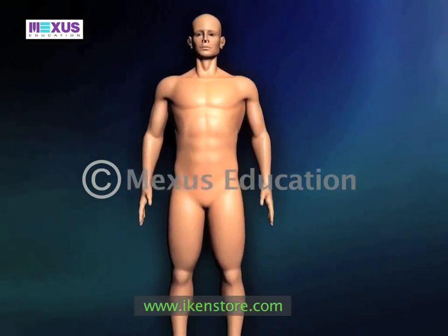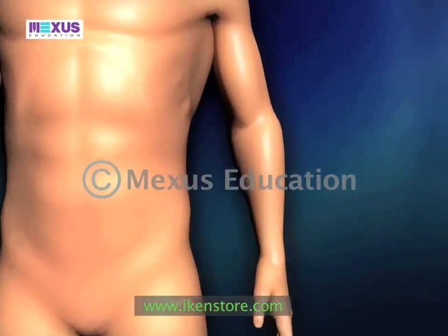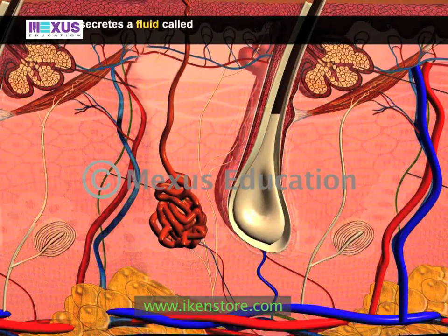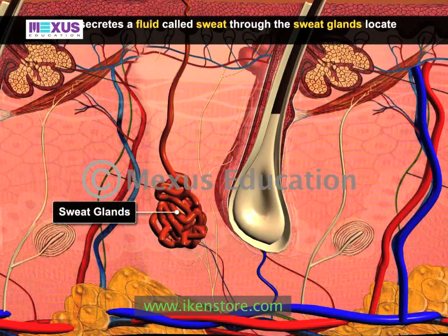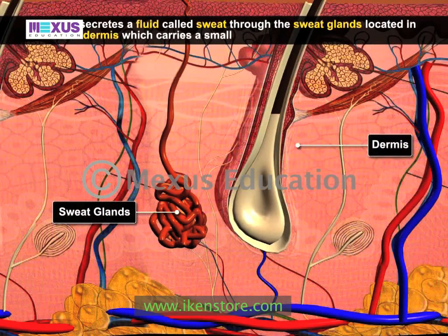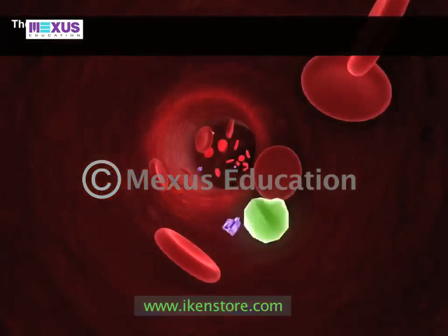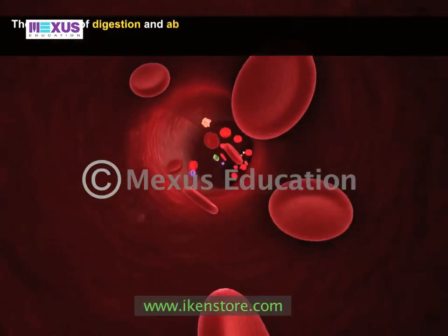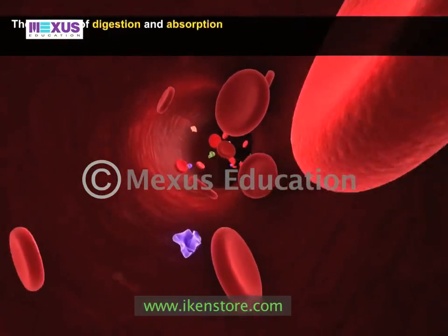Skin plays a minimal role in the human excretory system. The skin secretes a fluid called sweat through the sweat glands located in the dermis, which carries a small amount of metabolic wastes.